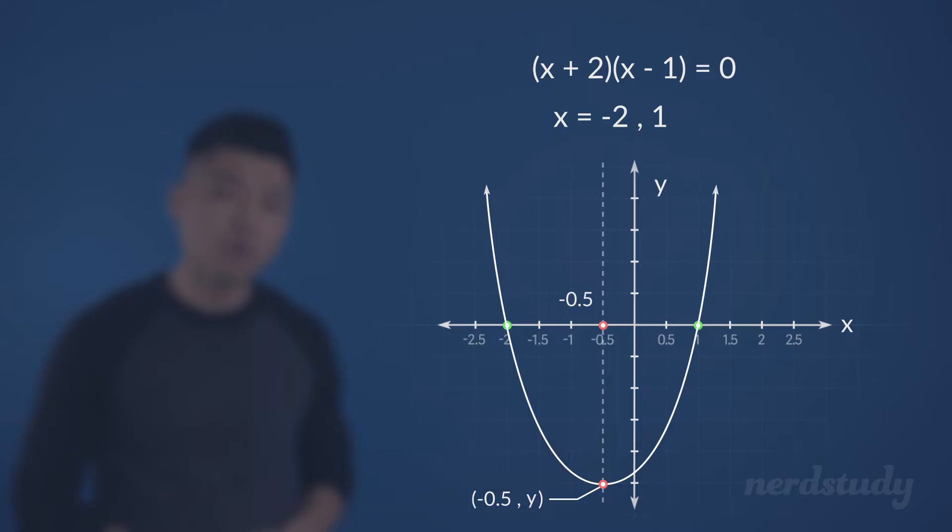So, to find out what the y value is for our vertex, we can simply plug negative 0.5 into x, into this equation. y equals x plus 2 multiplied by x minus 1. And notice how we change the equation to equal y. We're not interested in fixing the y value at 0, since we're interested in finding out where the vertex is, instead of finding out what values the graph might plot out when y is 0.